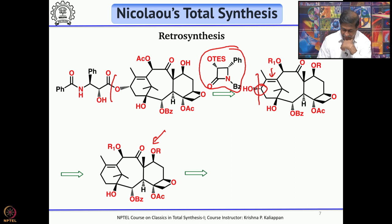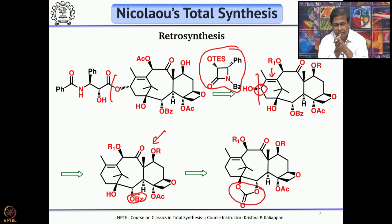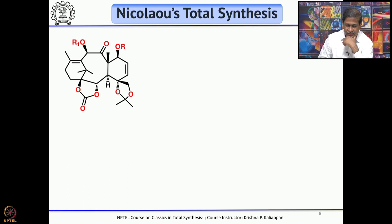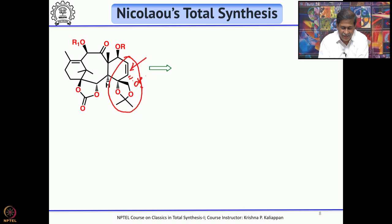The cyclic carbonate, if treated with phenylmagnesium bromide or phenyllithium, should open up to give a benzoate and a free hydroxyl group — so the two hydroxyl groups were protected as a cyclic carbonate. This can be obtained from a double bond: stereo- and regioselective hydroboration should give the hydroxyl group, and from there one can obtain the oxetane ring.